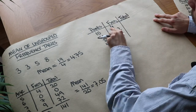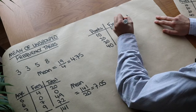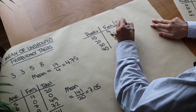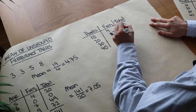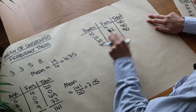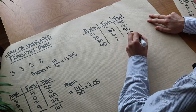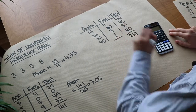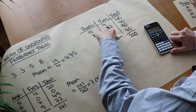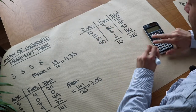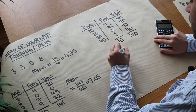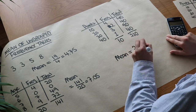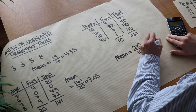Four people got 10 points, that's a total of 40 points. Two people got 20 points, that's a total of 40 as well. Three people got 30 points, that's a total of 90. One person got 40 points, that's a total of 40. Adding those together gives us 210. The total frequency is 4 plus 2 plus 3 plus 1, which is 10. Therefore the mean number of points is 210 divided by 10, which equals 21.